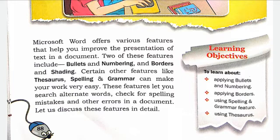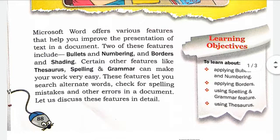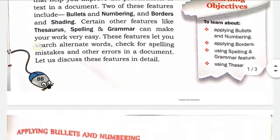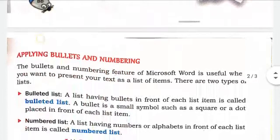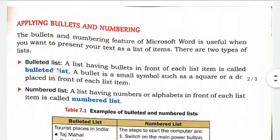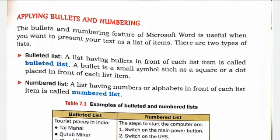इस feature की मदद से हम alternate word search कर सकते हैं। अगर कोई spelling mistake हो जाती है तो उस spelling को हम check कर सकते हैं। और document के अंदर जो भी error होता है उस error को हम यहाँ से find कर सकते हैं। अब इसी feature के बारे में details से हम नीचे discuss करेंगे — जैसे कि bullets and numbering कैसे apply करेंगे।